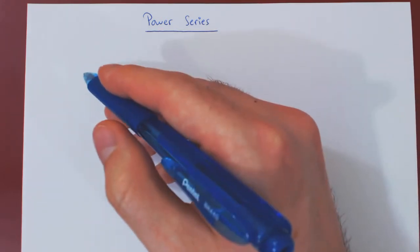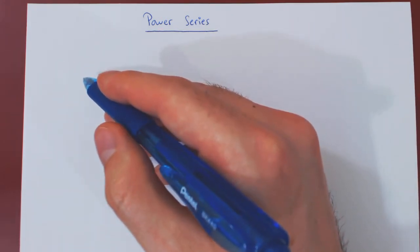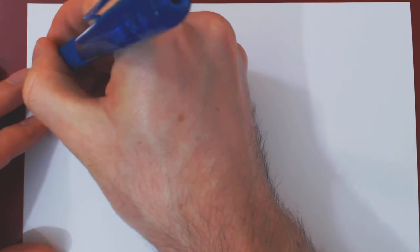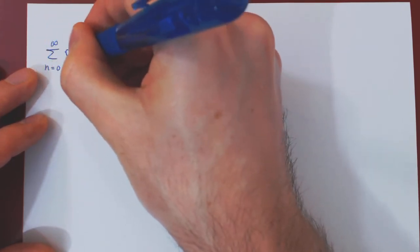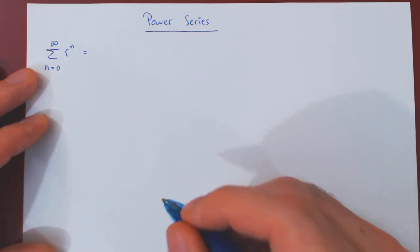So, let's begin with recalling the summation formula for an infinite geometric series. We are summing, as n goes from 0 to infinity, r to the n, where r is some fixed real number.